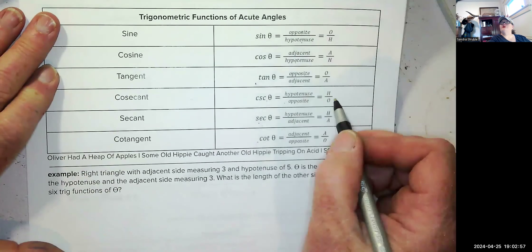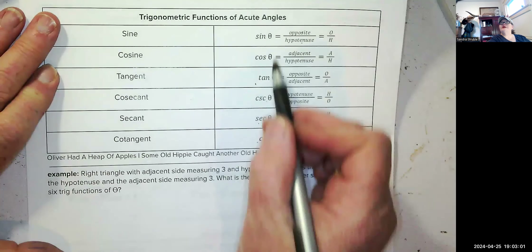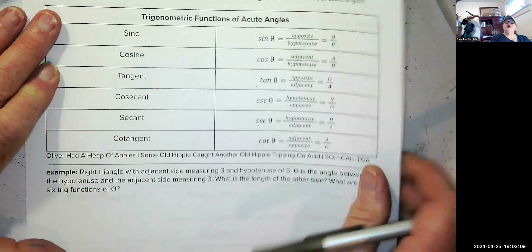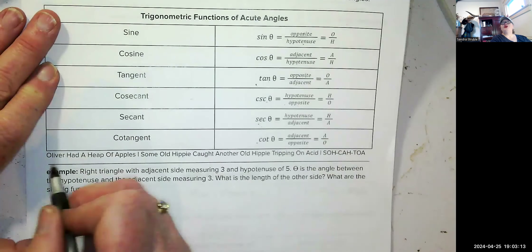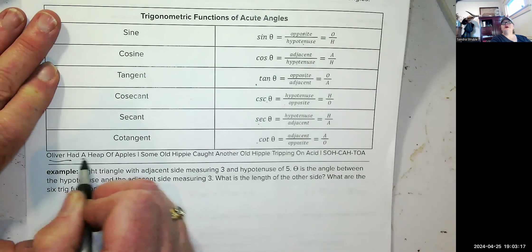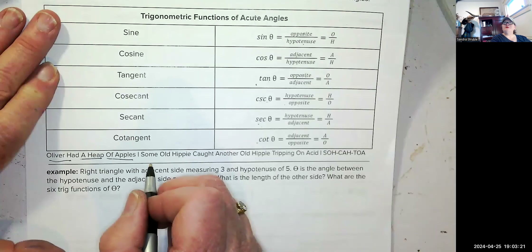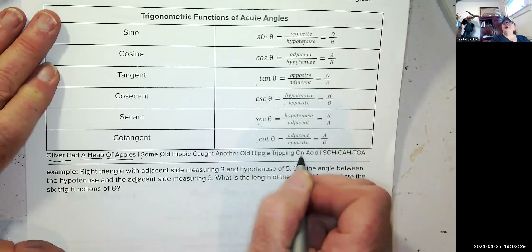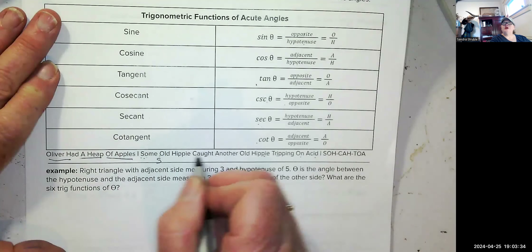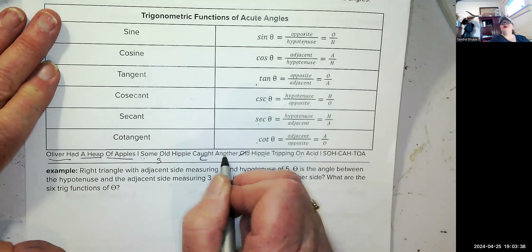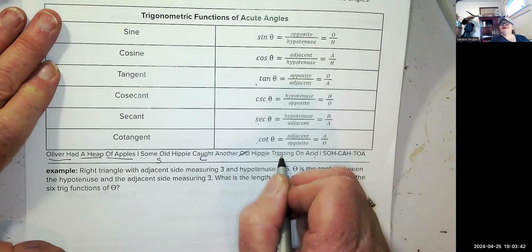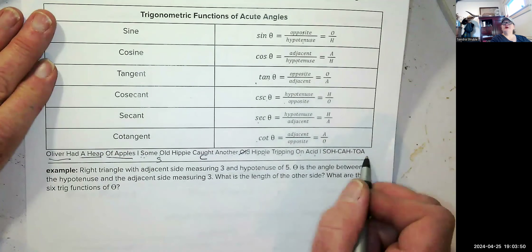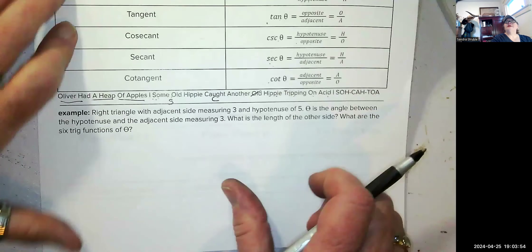If you just write sine, cosine, and tangent, and remember cosecant is the reciprocal of sine, secant is the reciprocal of cosine, and cotangent is the reciprocal of tangent, that's all you need. A memory device: 'Oliver had a heap of apples' for sine, cosine, tangent. Or 'Some old hippie caught another old hippie tripping on acid' — SOHCAHTOA. You'll hear that a lot in physics.